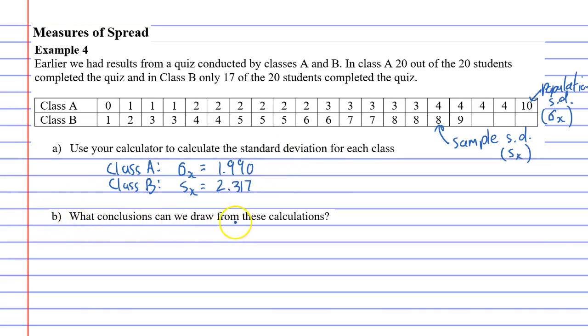Question B says, what conclusions can we draw from these calculations? Well, as I mentioned earlier, a lower standard deviation means the data is grouped closer together. Class A has a lower standard deviation. So we'll write that.